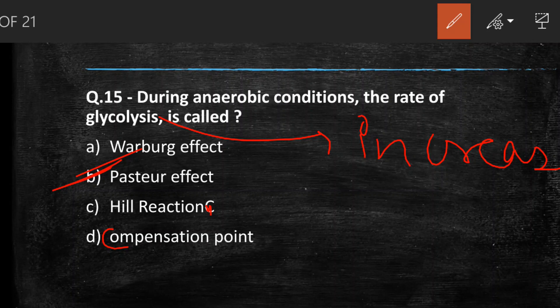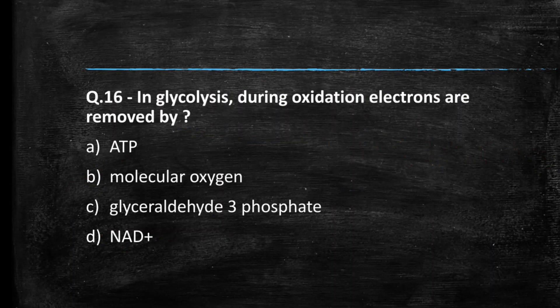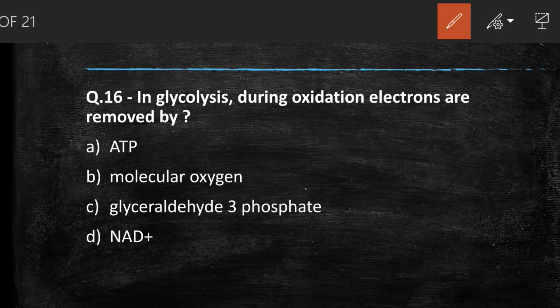Next question: in glycolysis, during oxidation, electrons are removed by — (A) ATP, (B) molecular oxygen, (C) glyceraldehyde-3-phosphate, (D) NAD⁺. The right answer is option D — the oxidation of glyceraldehyde-3-phosphate into 1,3-bisphosphoglycerate leads to the production of an NADH molecule.